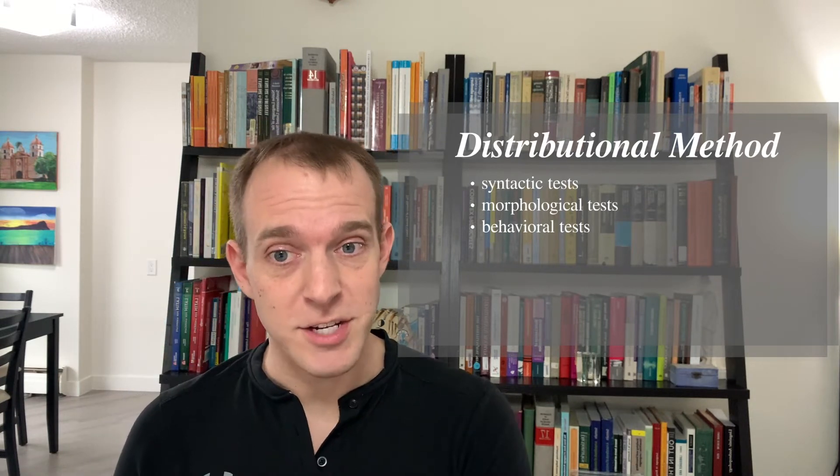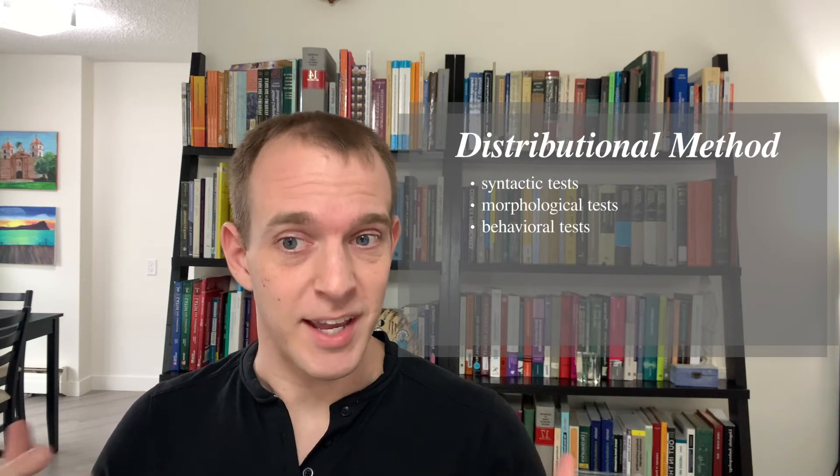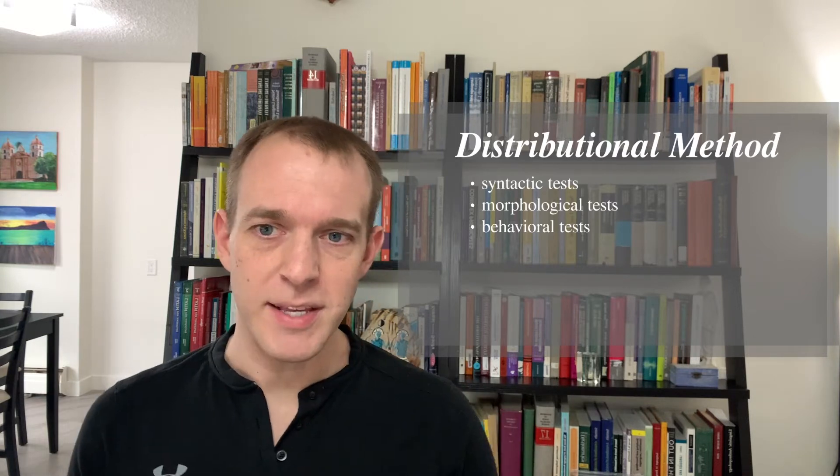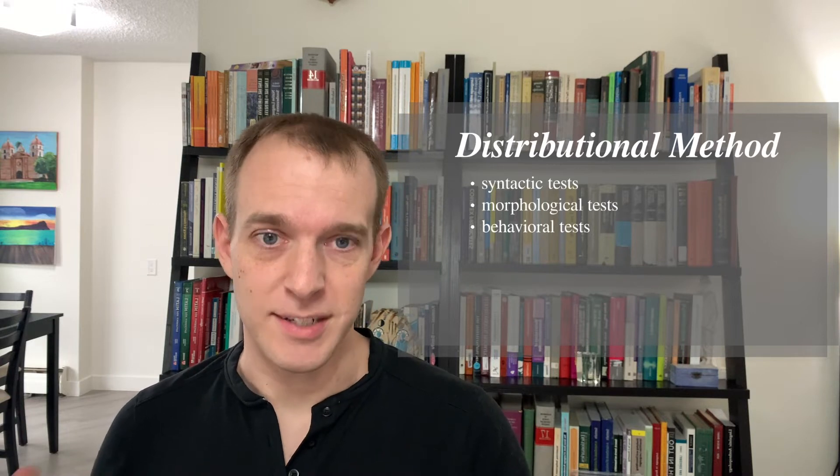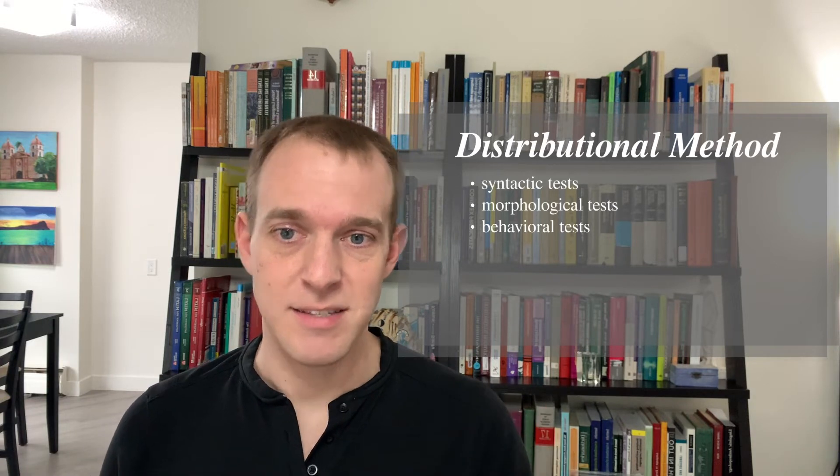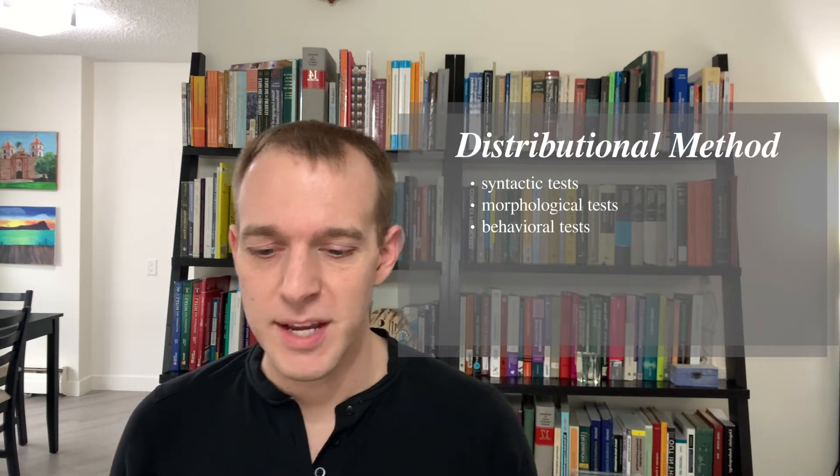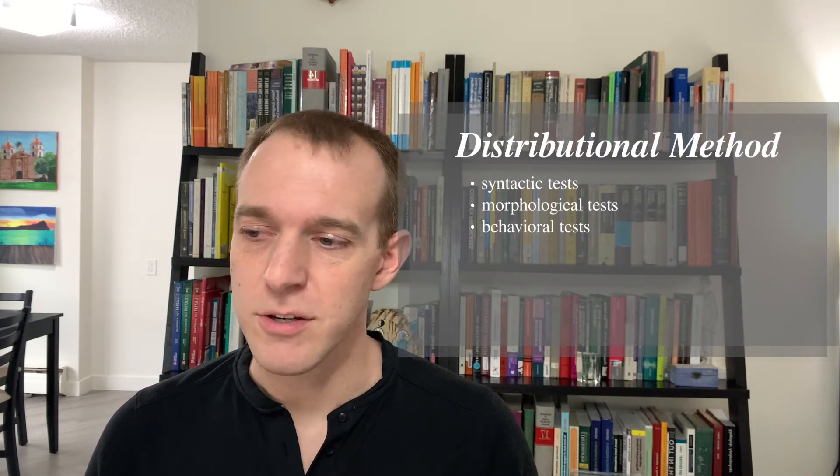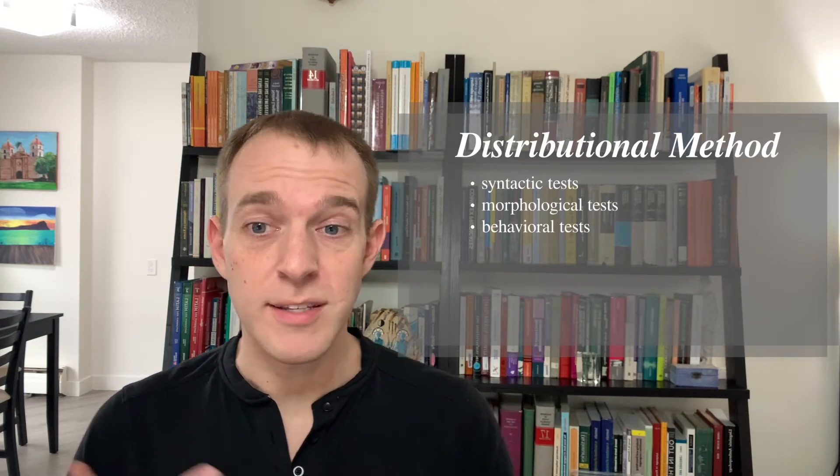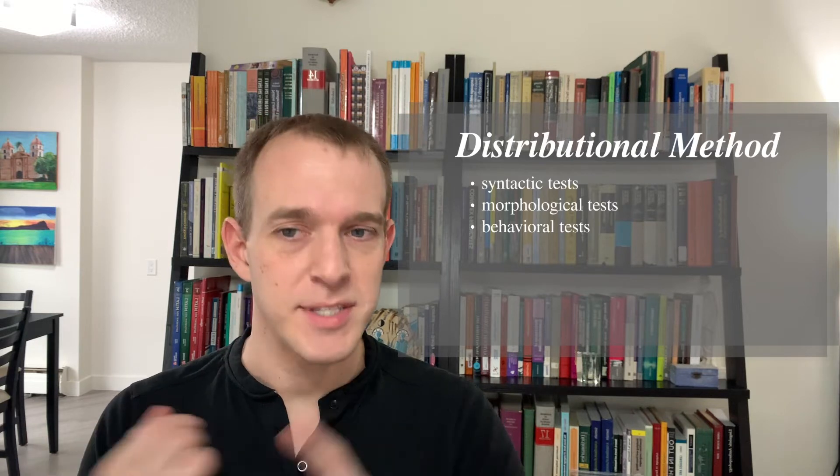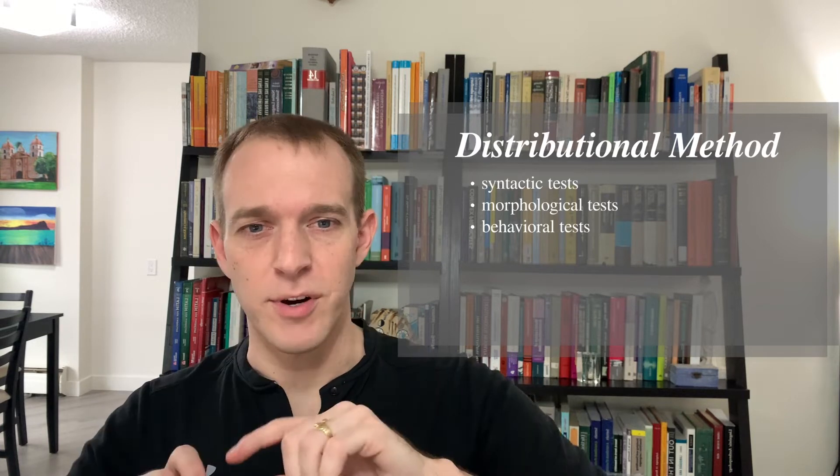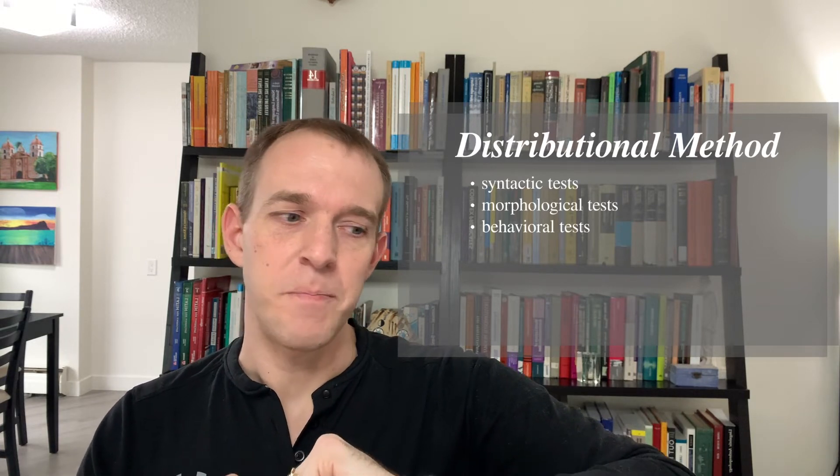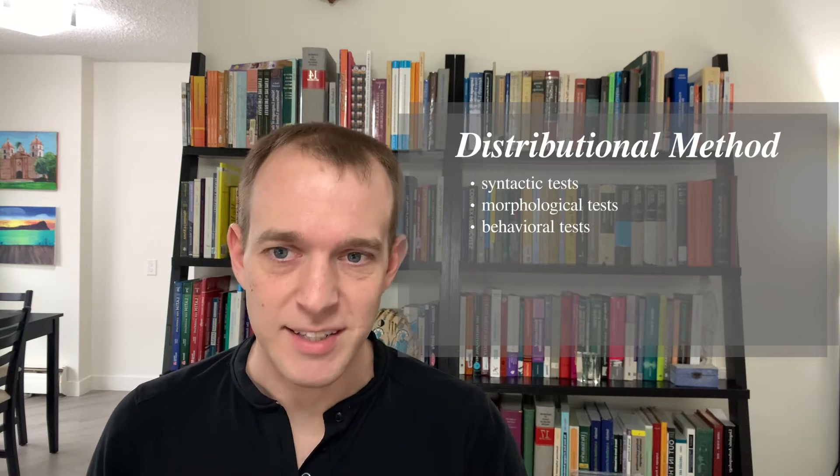So our theories about what the parts of speech are in language need to be based on observations about the behavior of words in a language. We have a number of different tests for that. And these tests put together are what are called the distributional method. So for any given word, we look at its distributions. We look to see what suffixes it can occur with. We look to see what slots in a sentence it can occur with. What are its effects on the surrounding words? So these are syntactic tests.